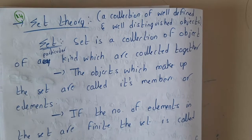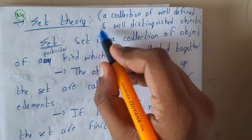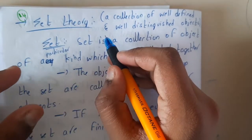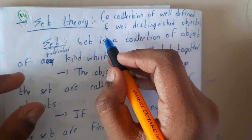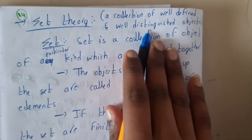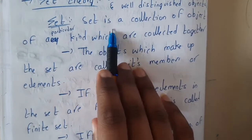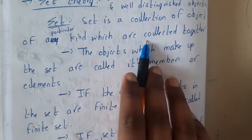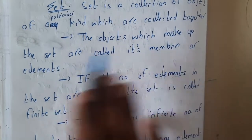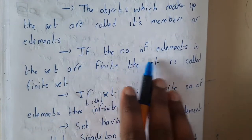So what is a set? A set is a collection of well-defined objects — like a set of even numbers or a set of vowels. It is a collection of well-defined and well-distinguished elements. The objects which make up the set are called its members or elements. Each element in the set is called an element or a member.